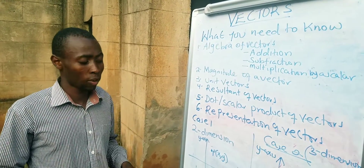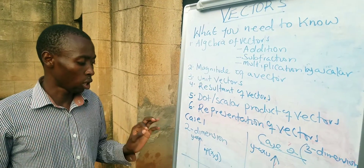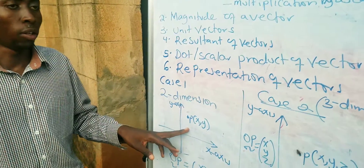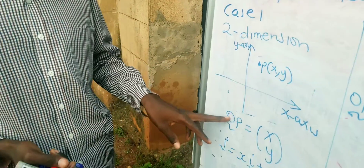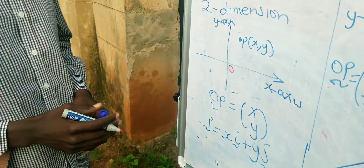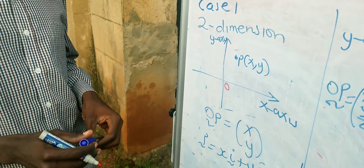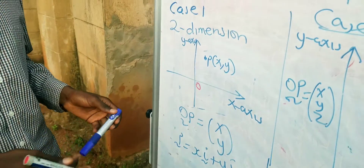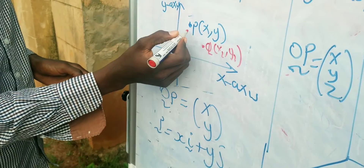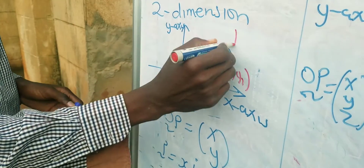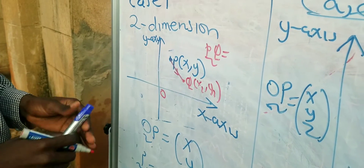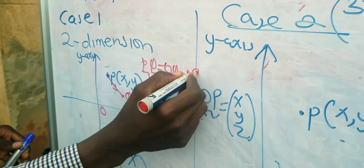At O-level we learnt about the position vector, which will always be a vector showing a point with reference to the origin. For example, if I have my point P here, then OP will be the position vector when considering the origin O. We also dealt with displacement vectors: if I create another point Q with coordinate (x₂, y₂) and move from P to Q, the vector PQ becomes the displacement vector, which we get as OQ minus OP.